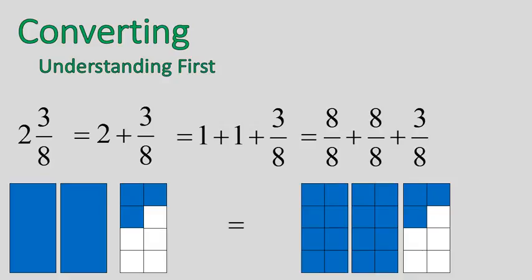One rectangle would be 8 parts out of 8 parts, and you can see that visually here. 8 parts out of 8, 8 parts out of 8, and then 3 parts out of 8.